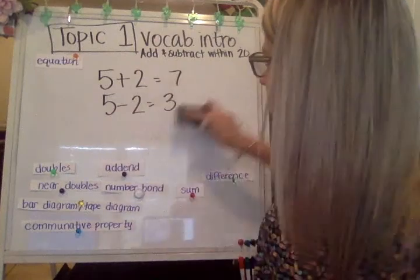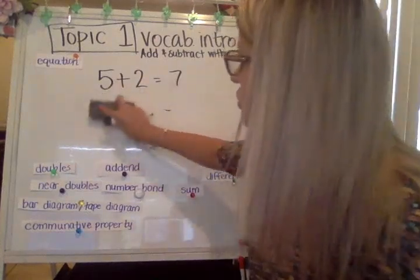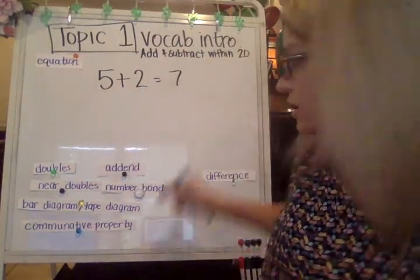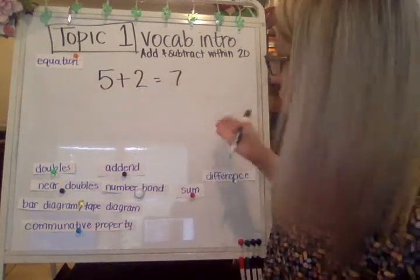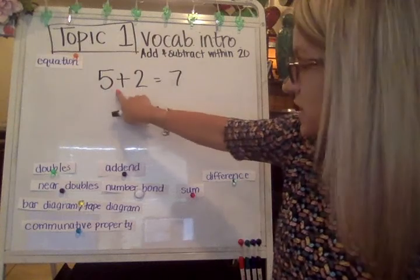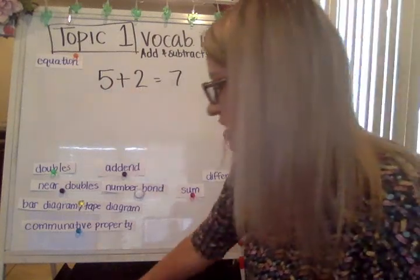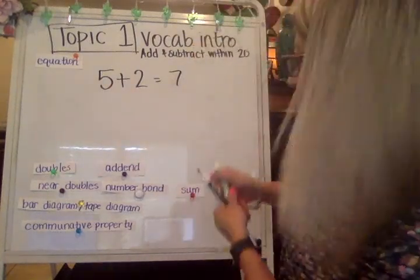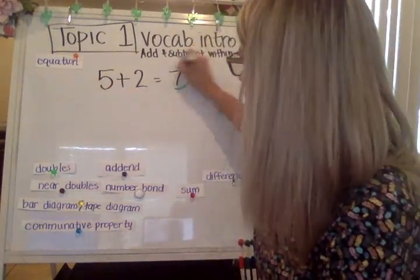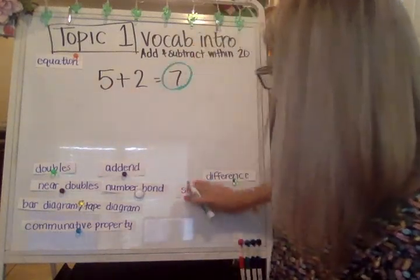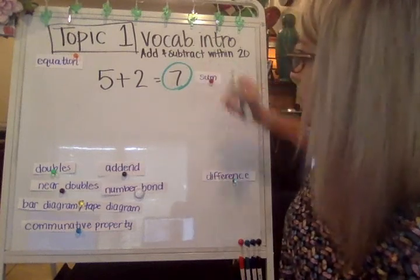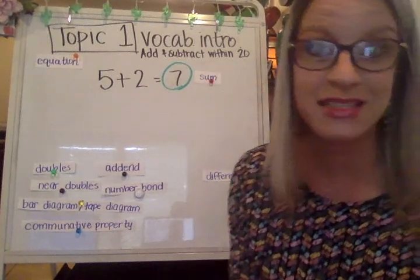I want to take a minute to look closer at this addition equation. When you're doing this addition equation, the answer is called the sum. So this green circle with the number seven is the sum.